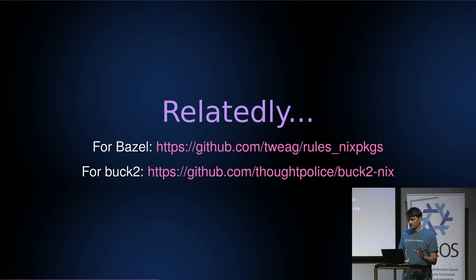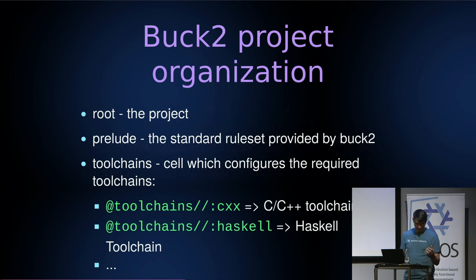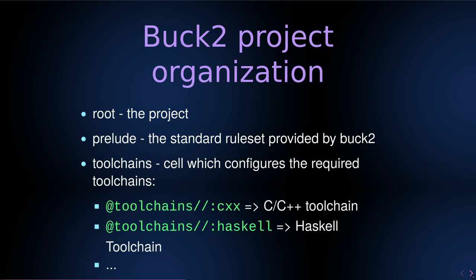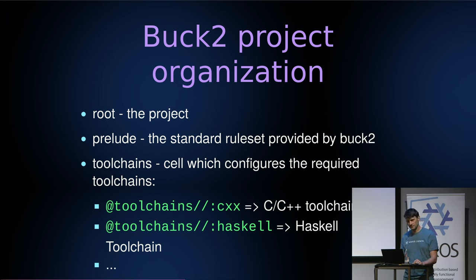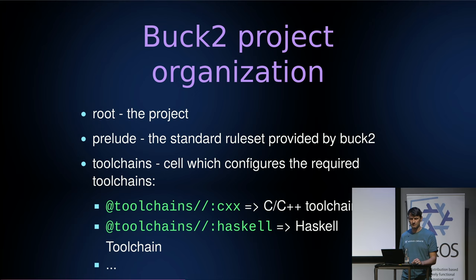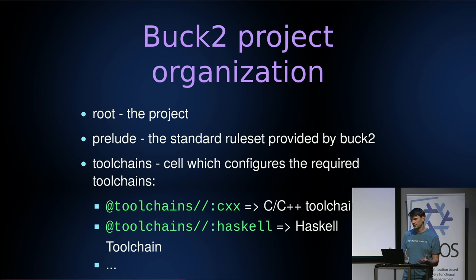With that out of the way, I want to introduce a bit of terminology — the organization of a typical Buck2 project. Buck2 is organized in what they call cells; Bazel calls these repositories. Buck2 does not have something like repository rules. You have these cells that you can manage manually, and they usually correspond to directories in your project. The root cell is the root project, and then you have the prelude — the standard ruleset Buck2 provides.